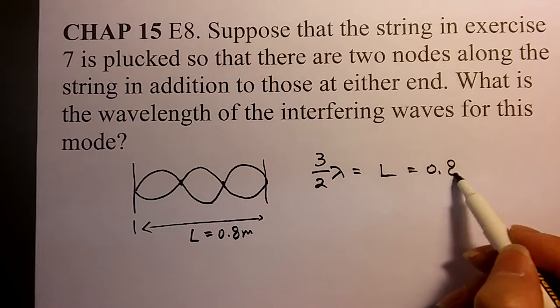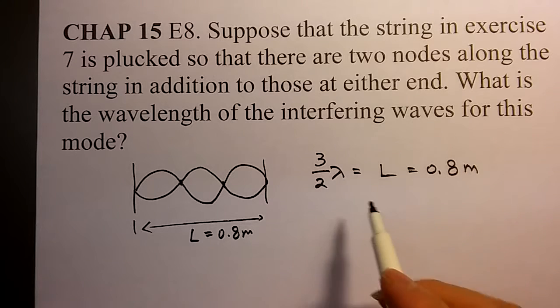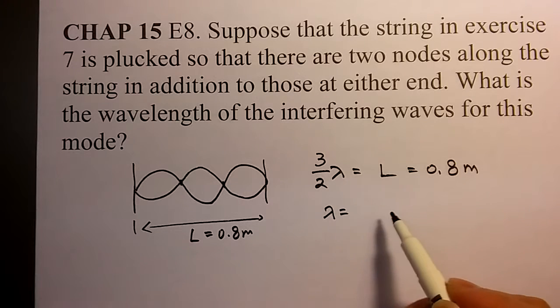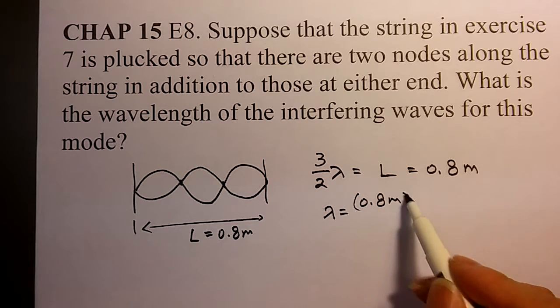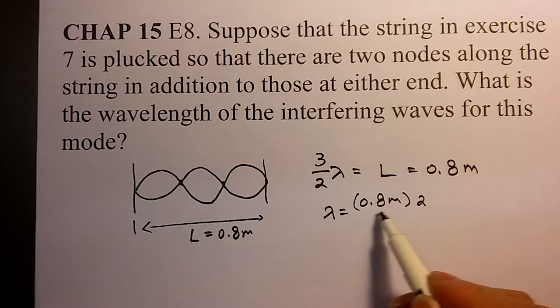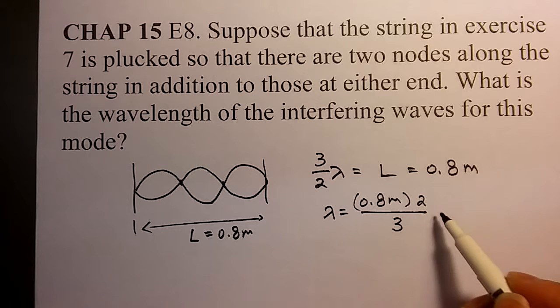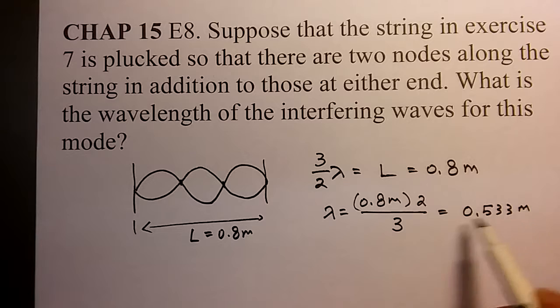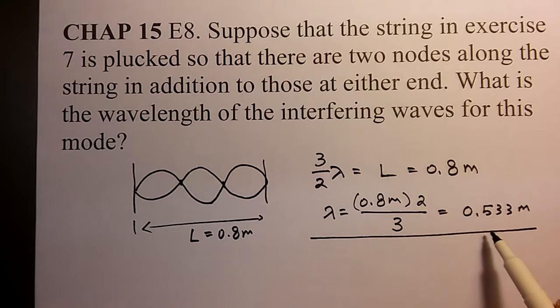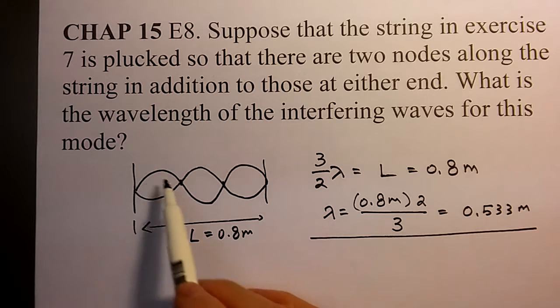which is 0.8 meters. Then your lambda becomes 0.8 meters times 2 divided by 3, which equals 0.533 meters. This is your wavelength for this wave.